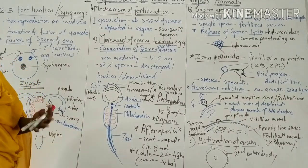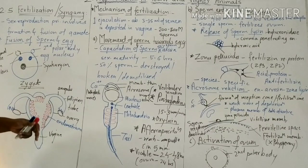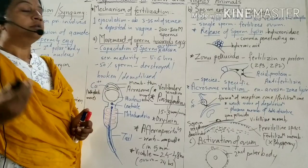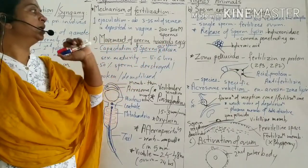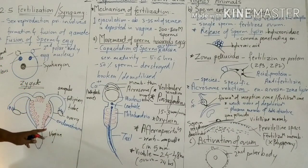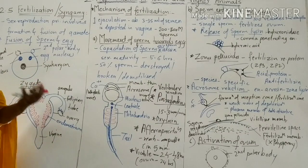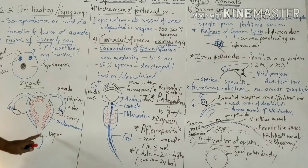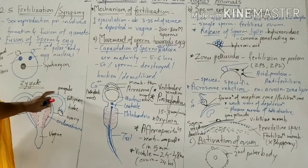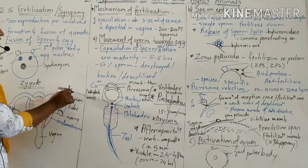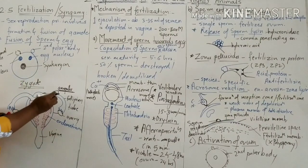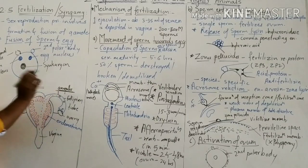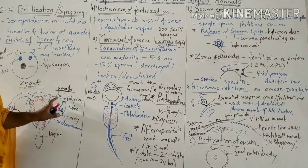The semen converts into liquid and sperms become active and motile in the female reproductive tract. The first event is the movement of sperm towards the egg. When sperm are ejaculated in the vagina, the semen becomes liquefied and the sperms become active and move towards the ampulla — from vagina, then uterus, then the fallopian tube ampulla — because the ampulla is the site of fertilization.